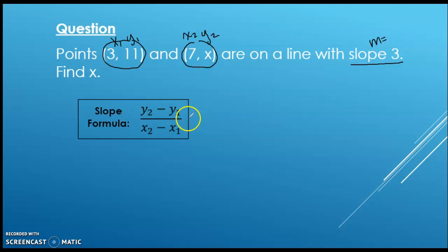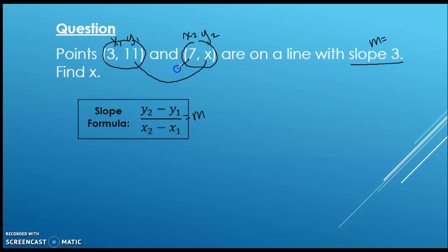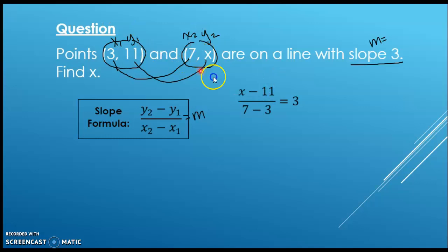So your slope formula — you can say this is equal to m. Let's go ahead and plug in our information. We have y2 minus y1 on top, x2 minus x1 on the bottom, and fill in our slope of three. So that looks like x minus eleven over seven minus three equals three.